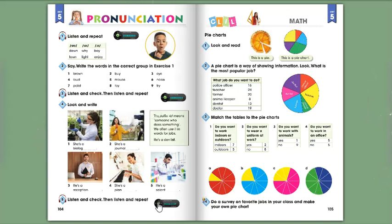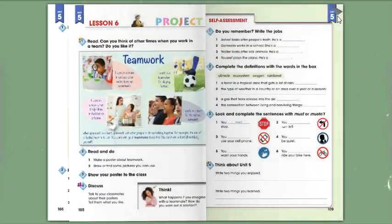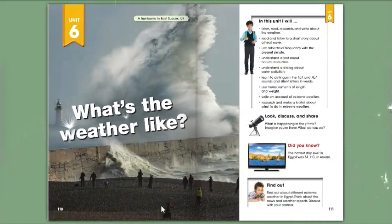Unit 5, Lesson 4, Page 104, Exercise 5. Listen and check, then listen and repeat. One, She's a biologist. Two, She's a journalist. Three, He's a receptionist. Four, She's a pianist. Five, He's a scientist.